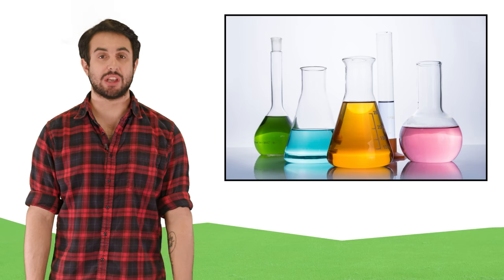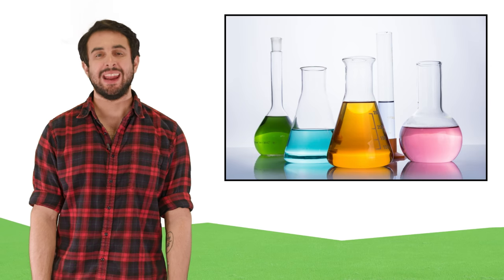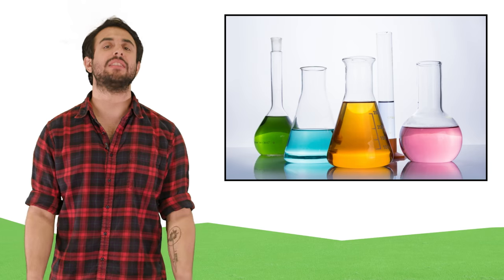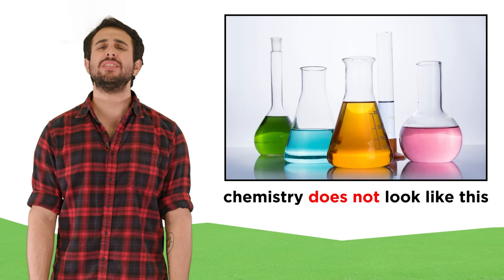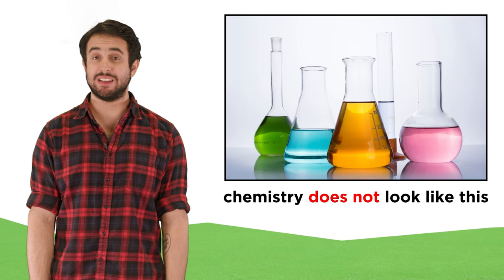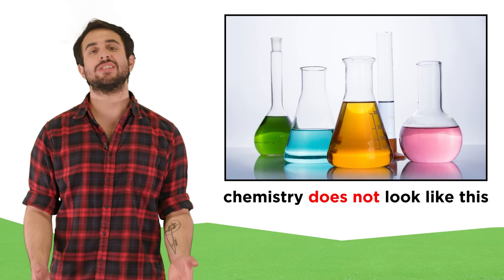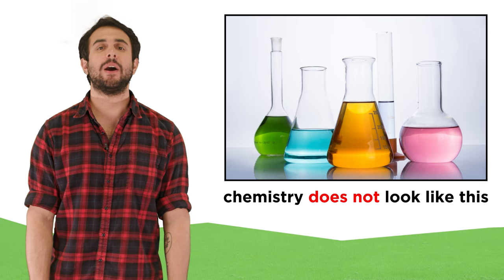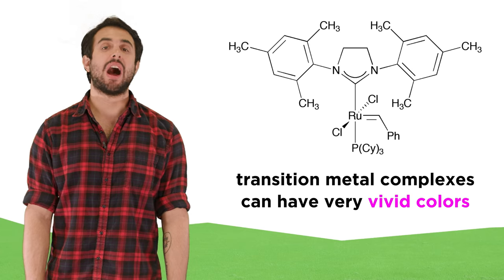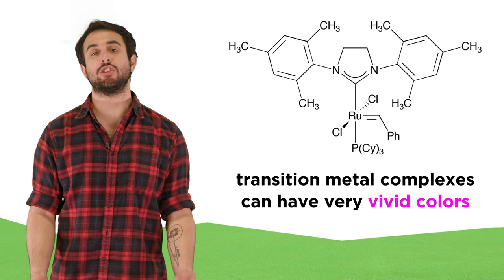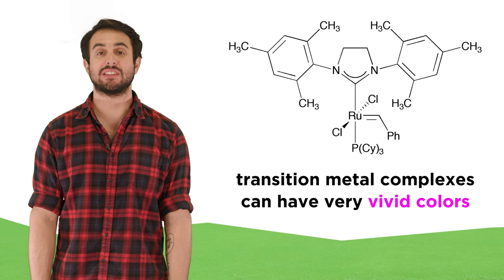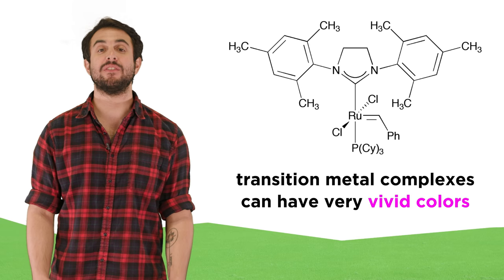Normally when you see stock images of chemistry laboratory equipment, it's filled with a variety of brightly colored liquids. This is very misleading, as most chemistry does not look like this, it's just to make the image pop. But there is one exception. The ions of certain transition metals, and the complexes they form, can have very vivid colors.